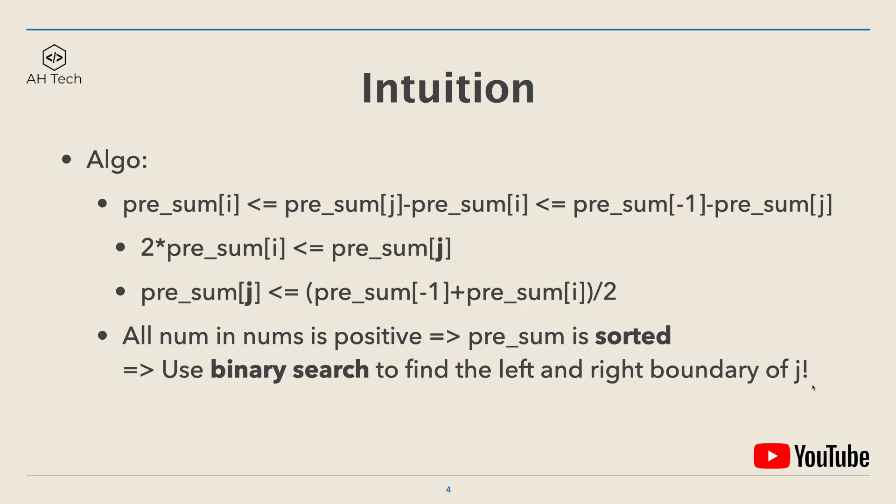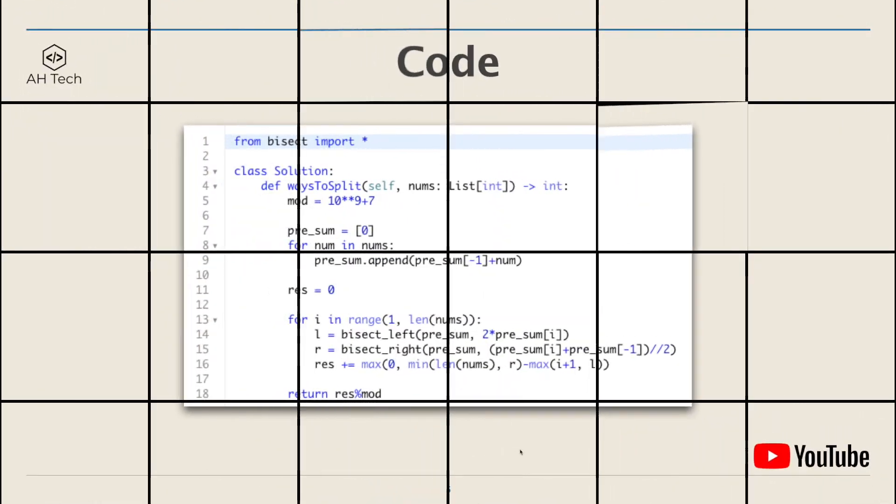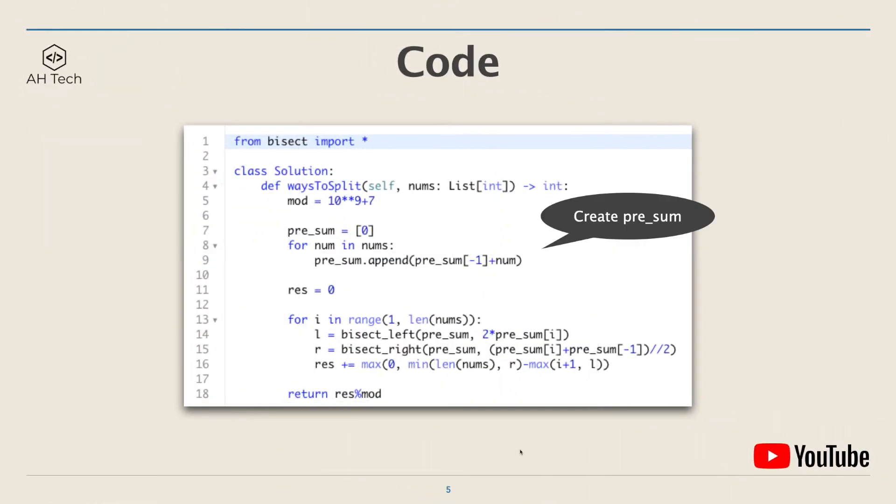Now let's look at the code. First is to create the prefix sum array and we will append a dummy 0 at the front. Next is to iterate through the prefix sum array. We can use Python's bisect_left and bisect_right API to binary search the left and right boundary of j. Finally, update res. Notice here that because of how binary search works, we have to take the minimum of the size of the numbers array or r, and the maximum of i plus one and l, and take the difference and add it into res. We will see why this is needed in the next section.